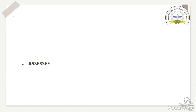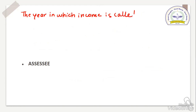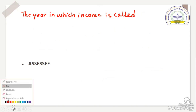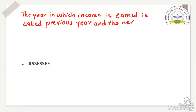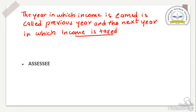Now look here students. The year in which income is earned is called previous year, and the next year in which income is taxed — this word is important, students — in which income is taxed, is called assessment year.